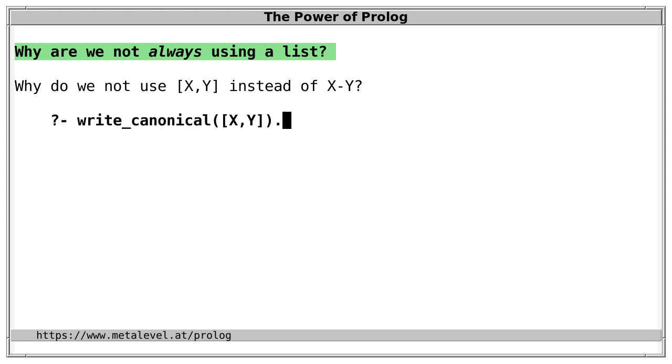Well, first of all, let's take a look at what such a list is, using write_canonical to get the canonical representation of this term. This is a term with the principal functor dot. Of course, this must be represented in memory somehow.